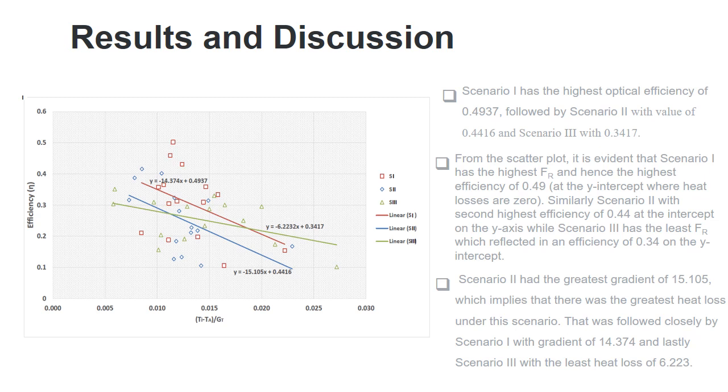Scenario 2 had the greatest gradient, the UL of about 15.10, which implies that there was the greatest heat loss under this scenario. That was followed closely by scenario 1 with gradient of 14.37, and lastly by scenario 3 with the least heat loss of 6.22.